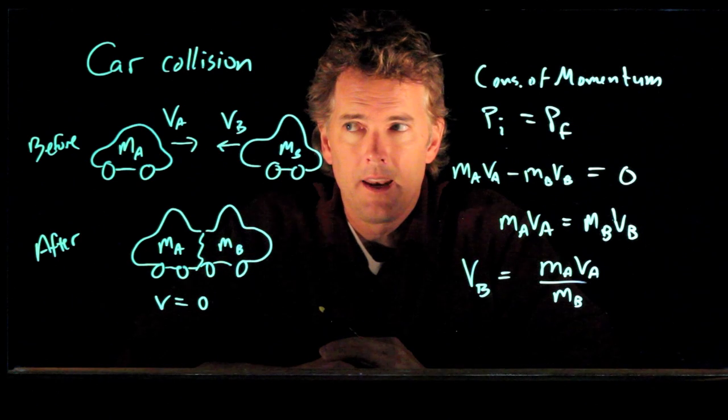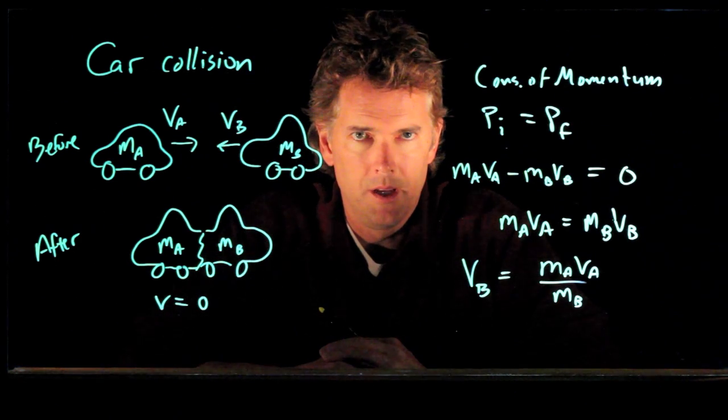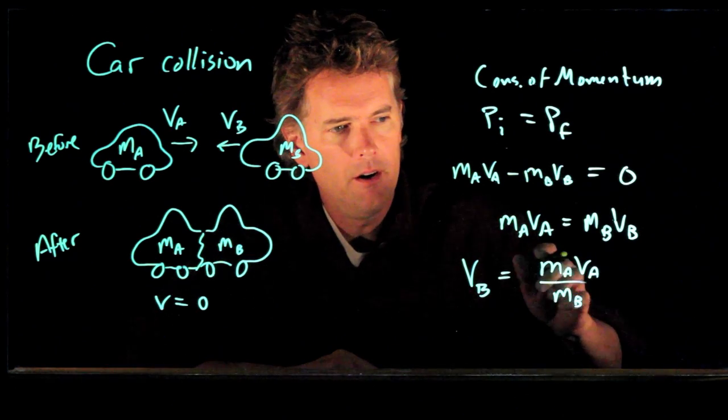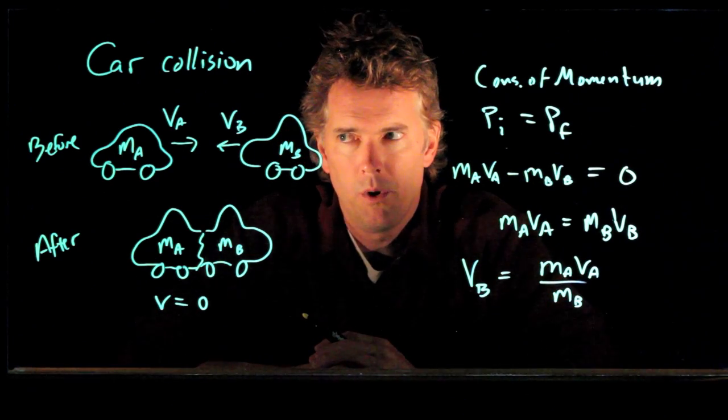If car A is a lot heavier than car B, then VB would have to be bigger than VA in order for this to work.